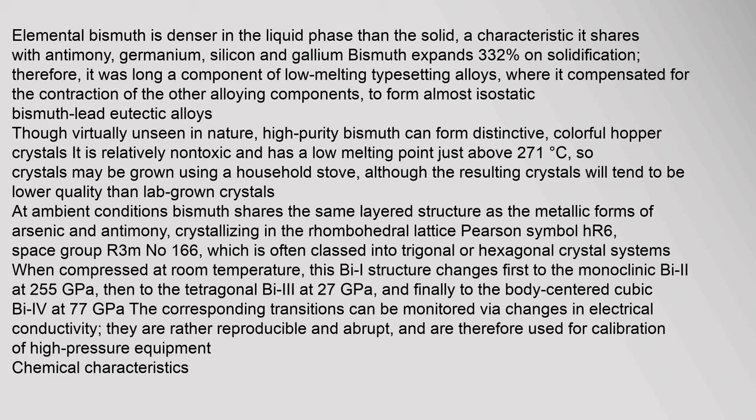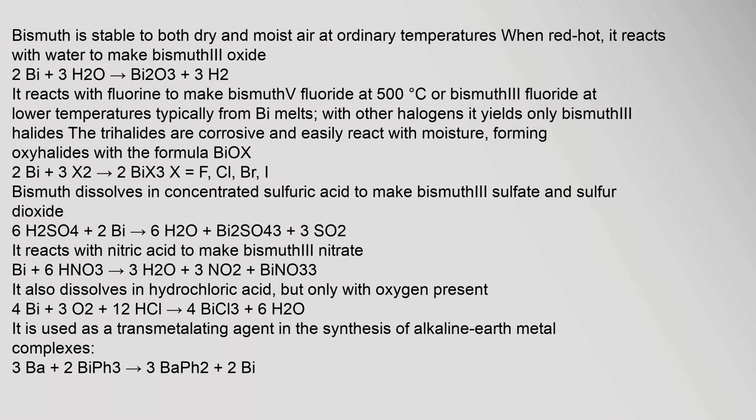Bismuth was long a component of low-melting typesetting alloys, where it compensated for the contraction of the other alloying components to form almost isostatic bismuth-lead eutectic alloys. Though virtually unseen in nature, high-purity bismuth can form distinctive, colourful hopper crystals. It is relatively non-toxic and has a low melting point just above 271°C. Bismuth is stable to both dry and moist air at ordinary temperatures. When red-hot, it reacts with water to make bismuth oxide. It reacts with fluorine to make bismuth(V) fluoride at 500°C.